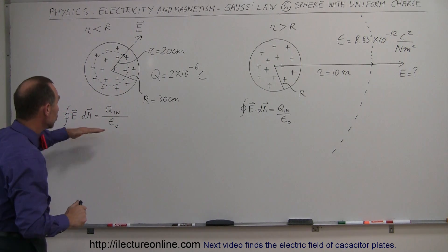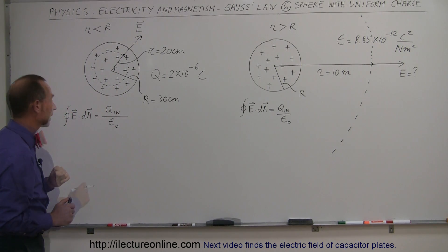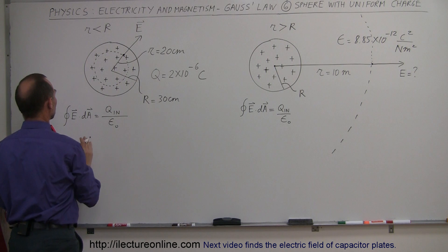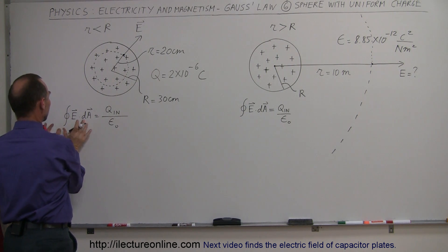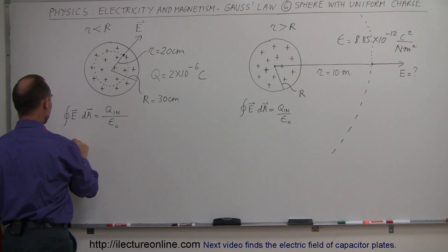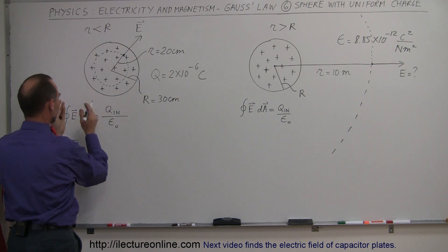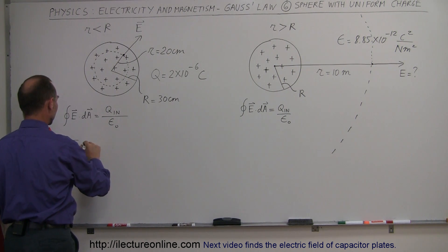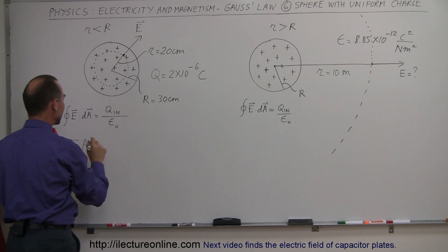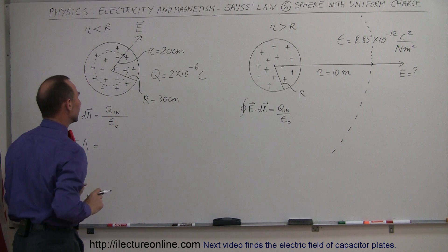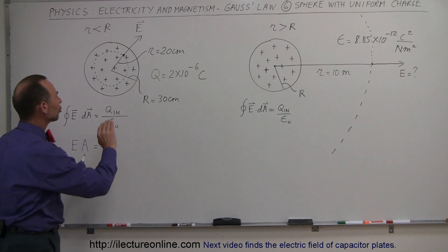That's why we can use Gauss's law. Since the electric field is perpendicular to the Gaussian surface, this part of the equation simply counts the strength of the electric field times the area — the total surface area A of the Gaussian surface — and that equals the charge inside divided by epsilon sub-naught.